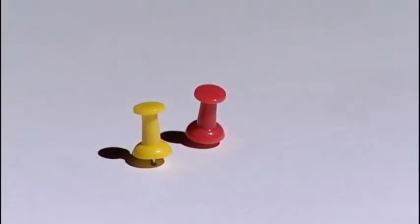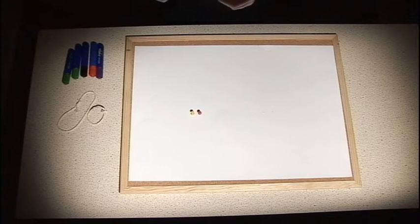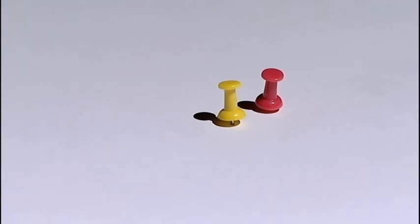These two pins are the foci of the ellipse. In the solar system's case, one pin represents the Sun and the other is just an arbitrary empty point in space.